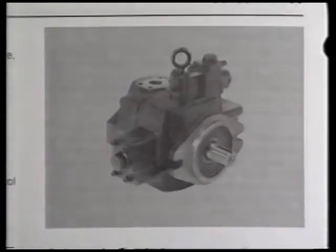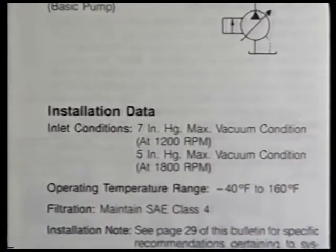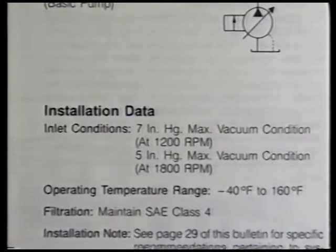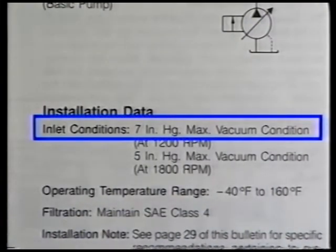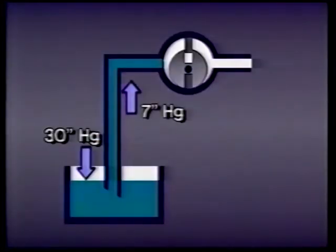Leading pump manufacturers give their suction specifications in terms of vacuum at sea level. If a pump manufacturer specifies that no more than seven inches of mercury vacuum be present at the pump's inlet port, this means that only seven inches of the available atmospheric pressure should be used to get the fluid up to the port.